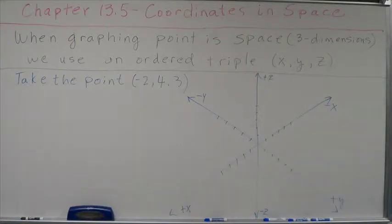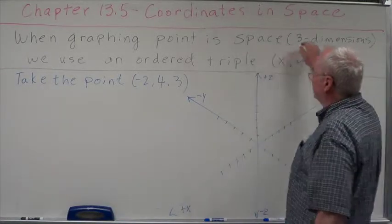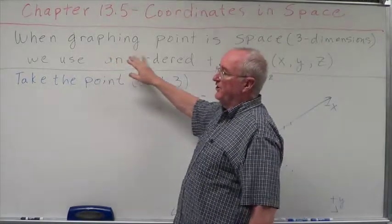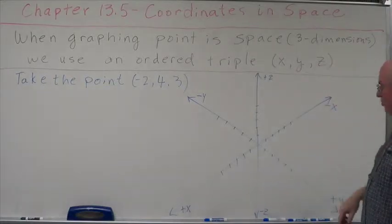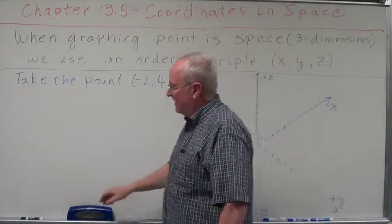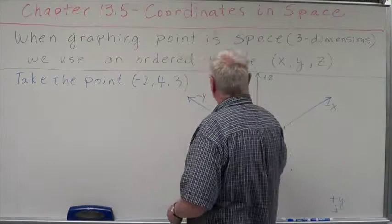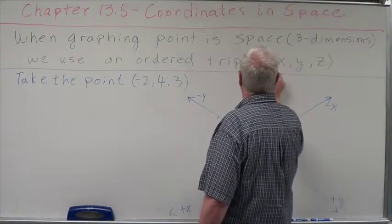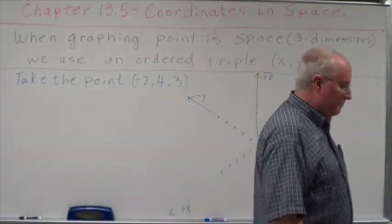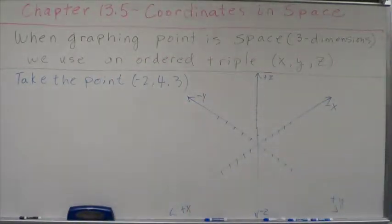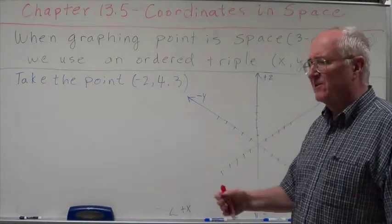So when we graph points in space or in three dimensions, we use what's called an ordered triple instead of an ordered pair, and it represents x, y, and z coordinates. Now, in this case, we're used to y being the vertical and x being the horizontal axes. But when we go to three axes, the x and y is what we call the horizontal axes, and then z becomes the vertical axes. And so you have to begin to look at it that way.